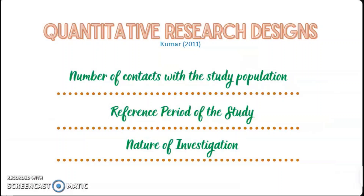According to Kumar in 2011, there are three different categories by which quantitative research designs are divided. The first category is number of contacts with the study population. The second one is research designs for reference period of the study. And lastly, nature of investigation.